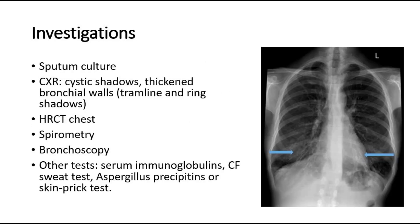To investigate for bronchiectasis, we perform sputum culture and sensitivity if the patient has sputum, to identify the causative organism and guide targeted treatment. On chest X-ray, the typical findings include tramline and ring shadows from thickened bronchial walls — as shown in this picture, pointed to by the arrows.